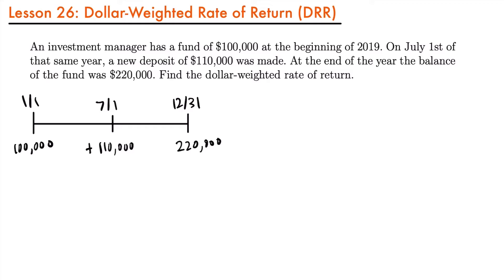To set up the equation of value, remember that the dollar-weighted rate of return is based on simple interest, so we will be using the accumulation factor of 1 plus i times t. We need to know the value of t at each of these moments in time. The beginning of the year is time equals zero, and the end of the year is time equals one. In between, we will have a fractional value of time based upon what month the deposit or withdrawal is made, assuming it is made at the beginning of the month.